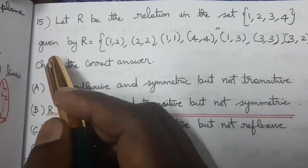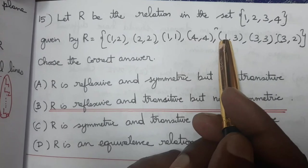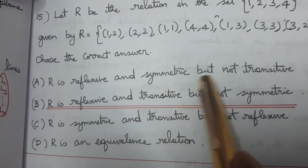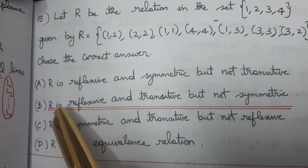Exercise 1.5. Let R be the relation in the set {1, 2, 3, 4} given by R equal to {(1,2), (2,1), (1,1), (4,4), (1,3), (3,3), (3,2)}. Choose the correct answer. The answer is B: R is reflexive and transitive but not symmetric.